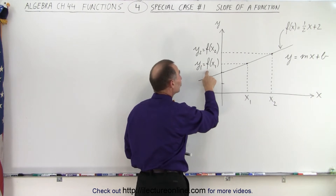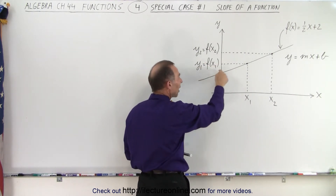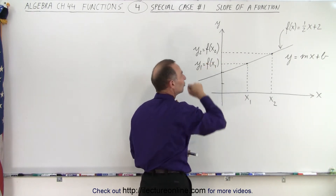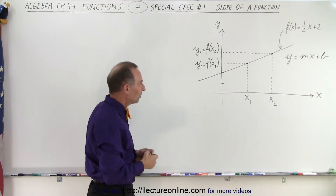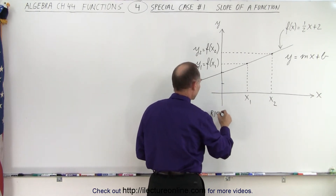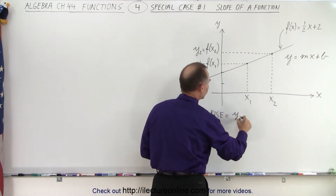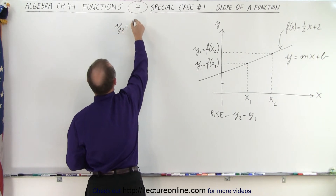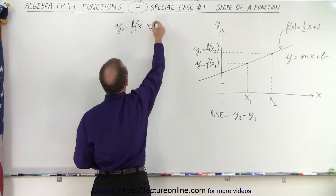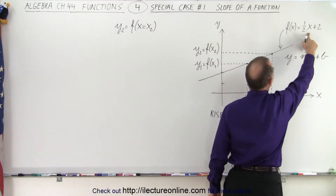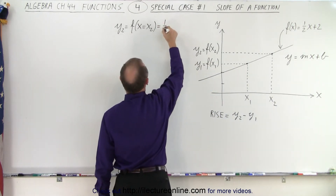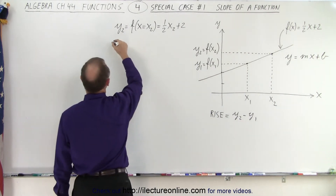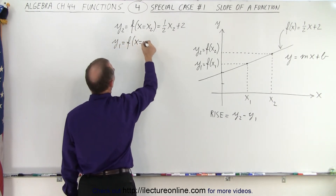We find y₁ and y₂ by evaluating the function f, replacing every x by x₁. This is a compact notation to write that the y-value you get when you plug in x₁ for x in our function is f(x₁). So when we want to figure out the rise, it's going to be y₂ minus y₁. We can define y₂ as the function evaluated when x equals x₂, and the function gives us one half x₂ plus 2.